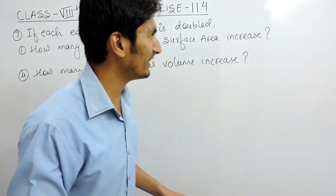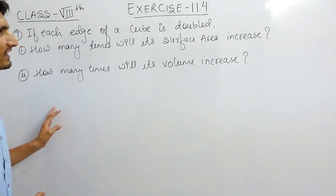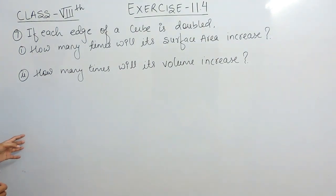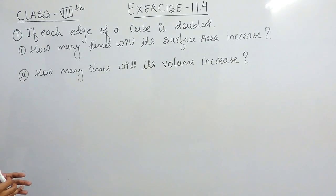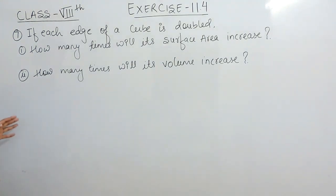Hello everyone. In this video we are going to solve question number 7 of exercise 11.4. The question says: if each edge of a cube is doubled, find how many times will its surface area increase, and in the second part, how many times will its volume increase.